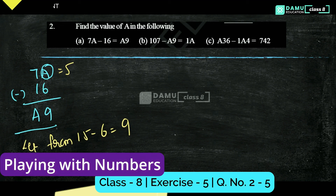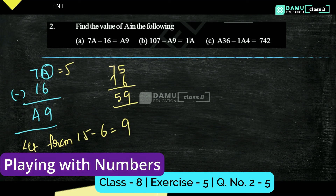So 5 minus 15 with borrowing, it will be okay. You can take it like that. So 75 minus 16 gives you 59. So 59 — that is the first method.